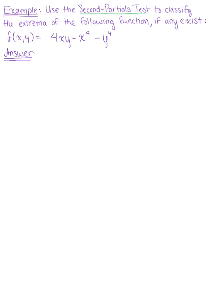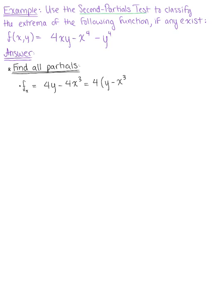The first thing we need to do is find the critical points — the potential critical points. So we need to find all the partial derivatives. The partial of f with respect to x is 4y minus 4x cubed, which we can simplify by factoring out 4, giving us 4 times (y minus x cubed). The partial derivative with respect to y is 4x minus 4y cubed, and again we have a greatest common factor of 4 that we can pull out.